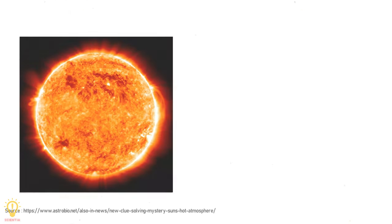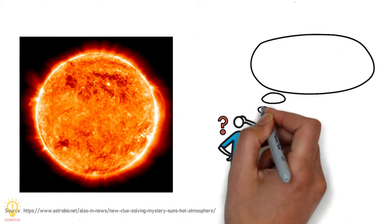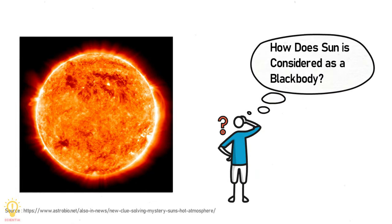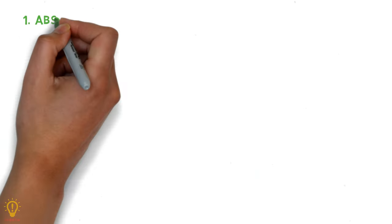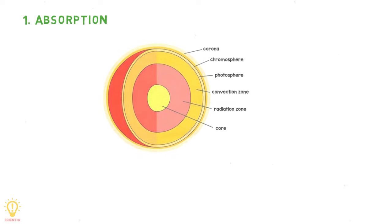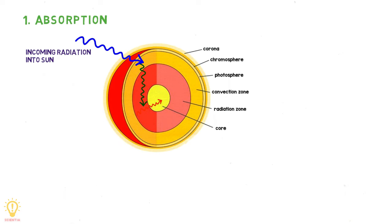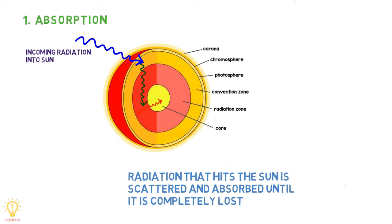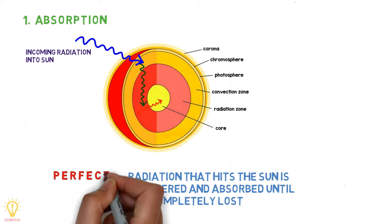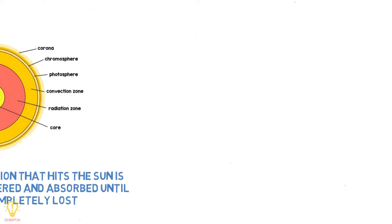So how does a bright shining Sun get considered as a black body? Let's consider the absorption and emission parts separately. The Sun has no solid surface. Any radiation that hits the Sun is scattered and absorbed until it is completely lost. This makes the Sun very close to a black body as far as absorption is considered.